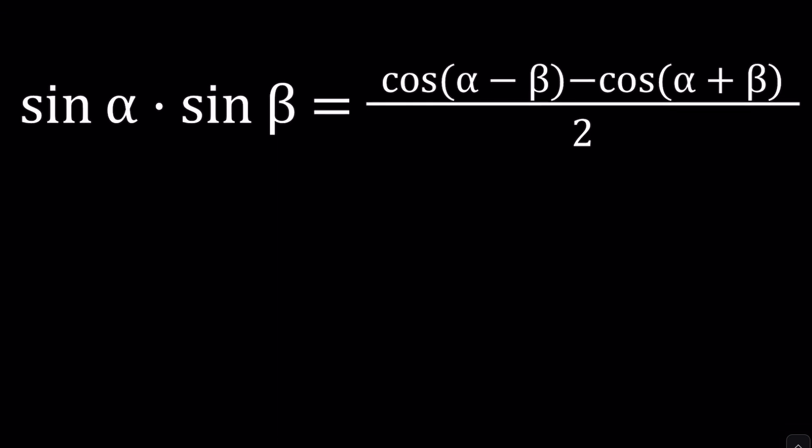This is the infamous identity, sine alpha multiplied by sine beta, which is given by the difference of two cosines. Alpha minus beta goes first. And just memorize these formulas, because without memorization, trigonometry is going to be horrible. And if your professor, teacher, instructor allows you to use a cheat sheet or a formula paper, use it.